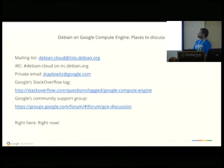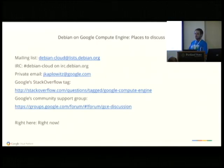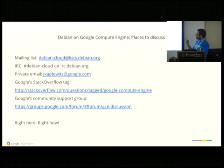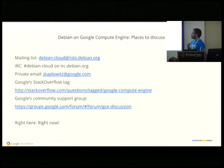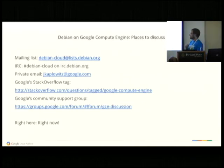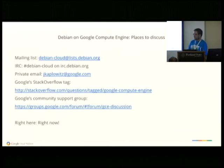Places you can discuss this stuff: there's a mailing list — debian-cloud — on Debian's normal list server. There's an IRC channel — #debian-cloud — on Debian's normal IRC server. You can email me: my Debian email address is jimmy@debian.org or my work address is jcaplowitz@google.com. We have a Stack Overflow tag for user support. We also have a Google group which is usable via email where users ask questions. There are also paid support options, but these are the free options and they are heavily used.